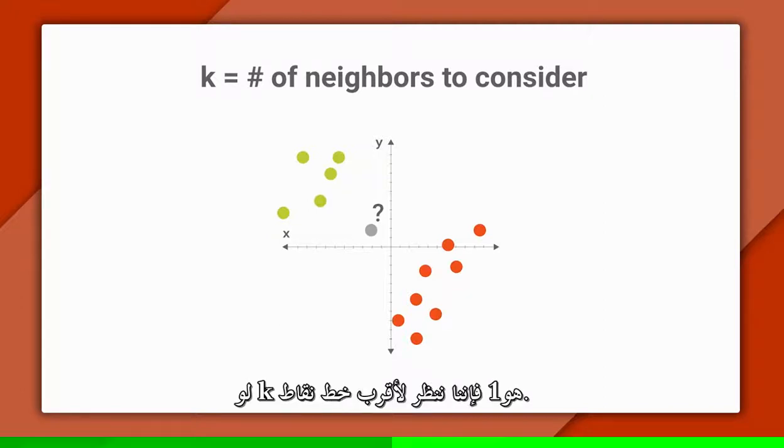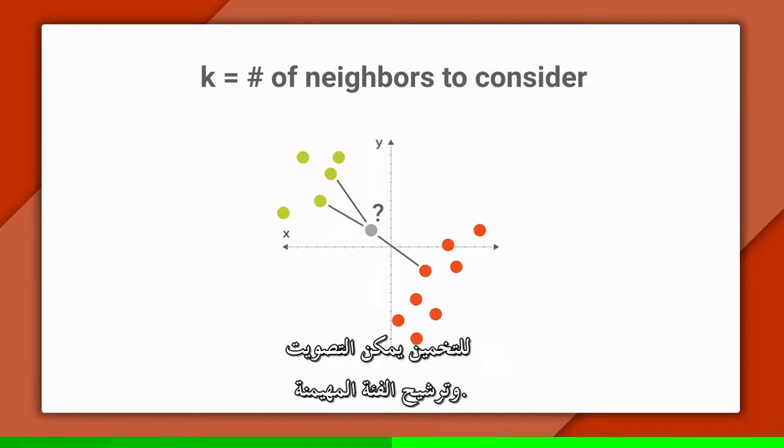If k was one, we'd just look at the closest training point. But if k was three, we'd look at the three closest. In this case, two of those are green and one is red. To predict we could vote and predict the majority class.